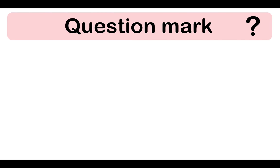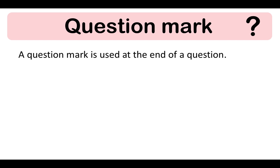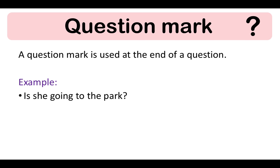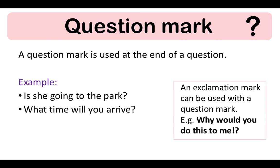A question mark is used at the end of a question. For example: 'Is she going to the park?' and 'What time will you arrive?' Remember, an exclamation mark can be used with a question mark. For example: 'Why would you do this to me?!' The exclamation mark indicates strong emotion, and the question mark indicates a question is being asked.